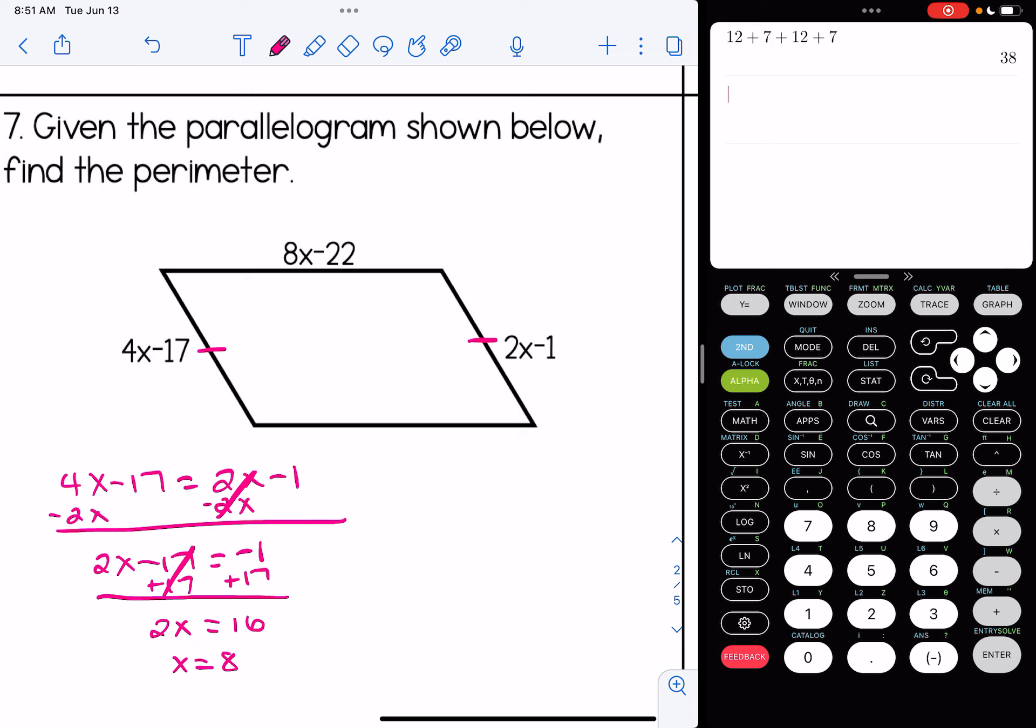So if I plug that into either of those sides here, I'm going to get that each of these sides is 15. Again, I'm getting that by plugging in 8 for X. So 2 times 8 is 16 minus 1 gives us 15. Or on the left side, 4 times 8 is 32 minus 17 will give us 15 as well.